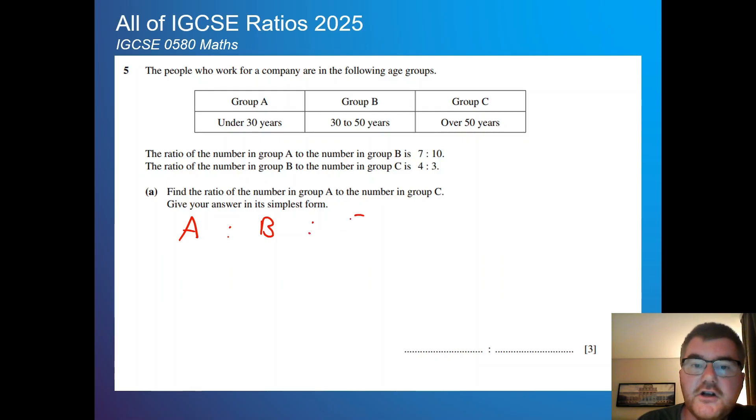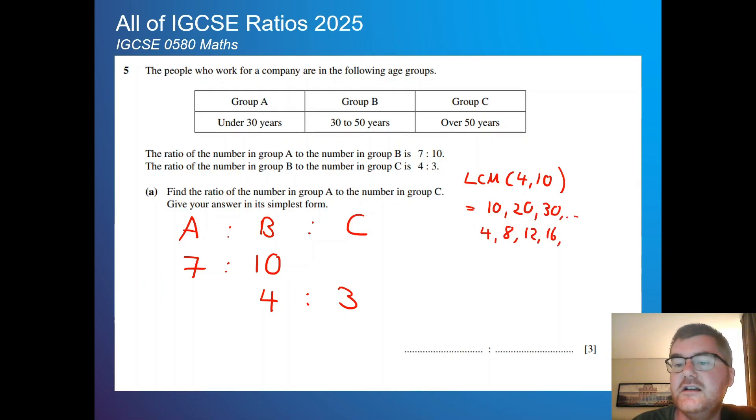As long as we write this out clearly, that's the most important thing. So I've got the ratio A to B to C. So A to B, that's the ratio 7 to 10. And then the ratio B to C is 4 to 3. Now I want to be able to compare these two ratios together. So essentially what I'm looking for here is the lowest common multiple of 4 and 10. So if I write out a 10 times table, I have 10, 20, 30, and the 4 times table: 4, 8, 12, 16, 20. So notice both have 20 in their times tables.